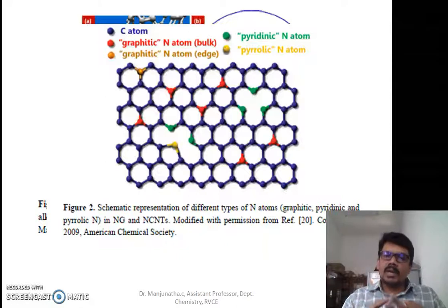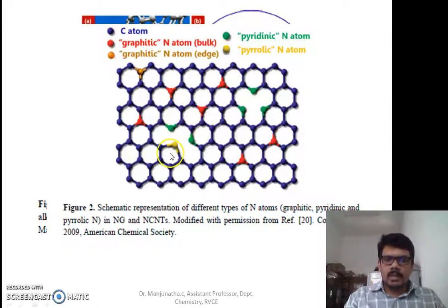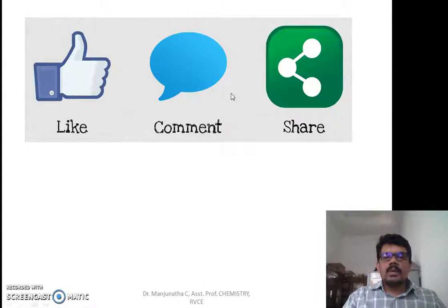The four types are: graphitic nitrogen atom in bulk, graphitic nitrogen atom at the edge—these do not affect the hybridization; pyridinic nitrogen atom, which is a six-membered ring with one nitrogen atom; and pyrrolic nitrogen atom, shown in yellow, which is a five-membered ring while the others are six-membered.